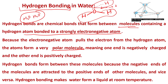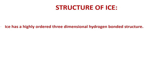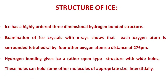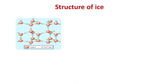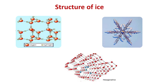The structure of ice is a highly ordered three-dimensional hydrogen-bonded structure. Hydrogen bonding gives ice a rather open-type structure with wide holes, and these holes can hold other molecules of appropriate size interstitially — meaning in the spaces between the molecules. The structure shows larger oxygen atoms and smaller hydrogen atoms arranged in a hexagonal pattern.